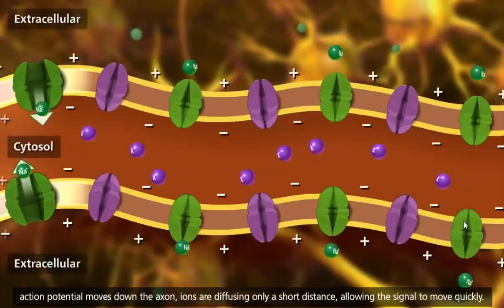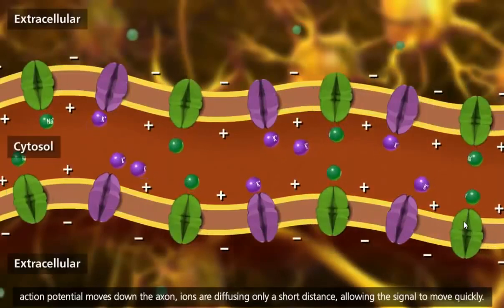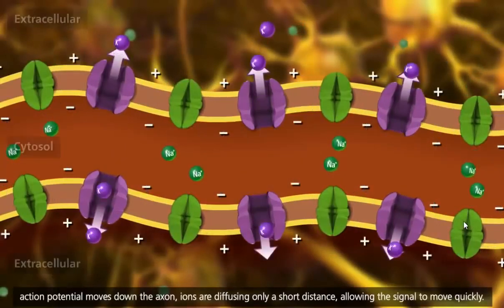As the action potential moves down the axon, ions are diffusing only a short distance, allowing the signal to move quickly.